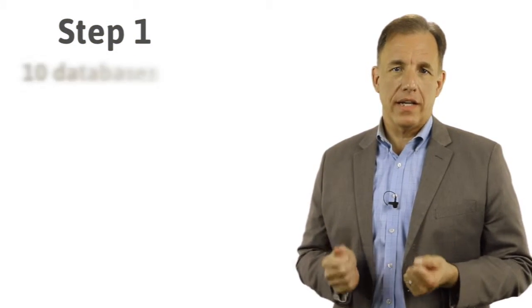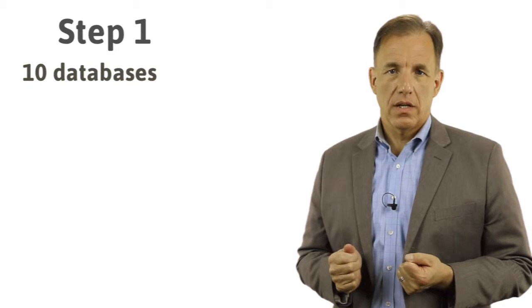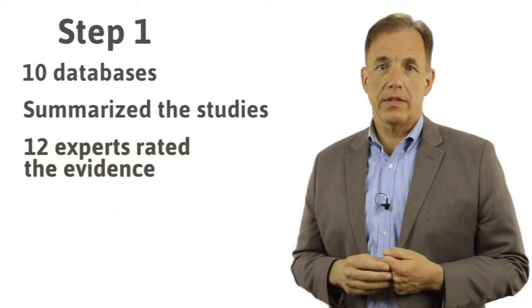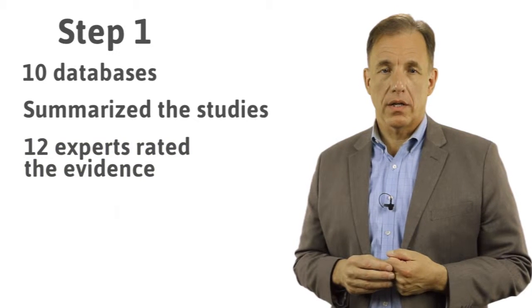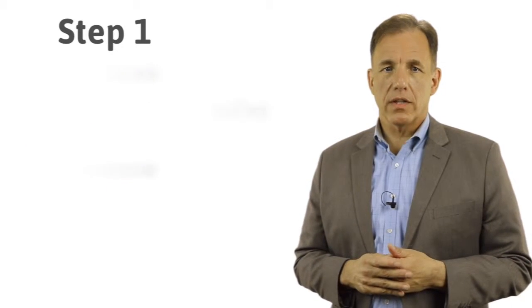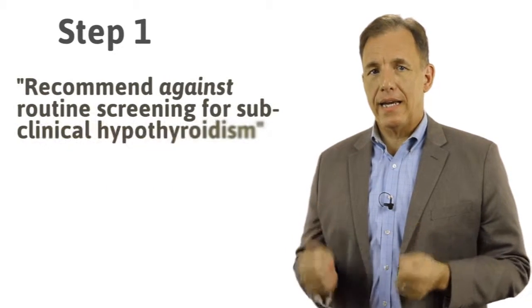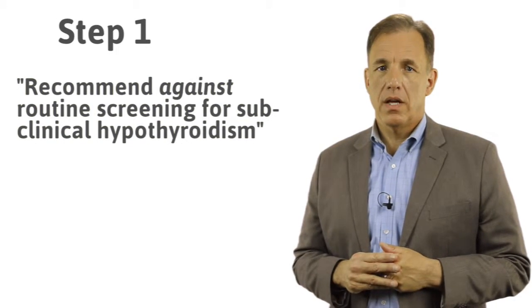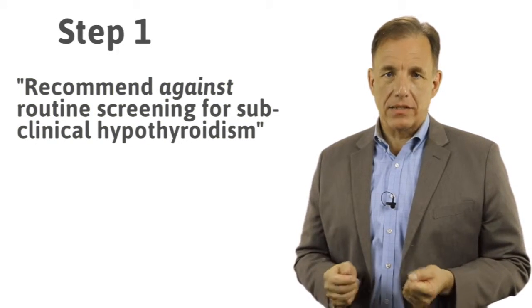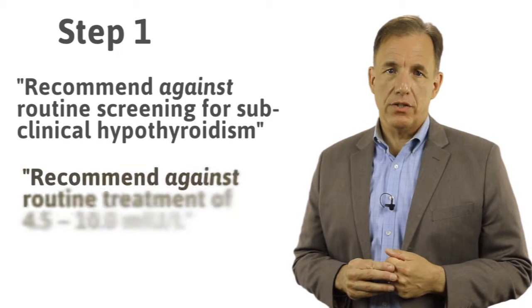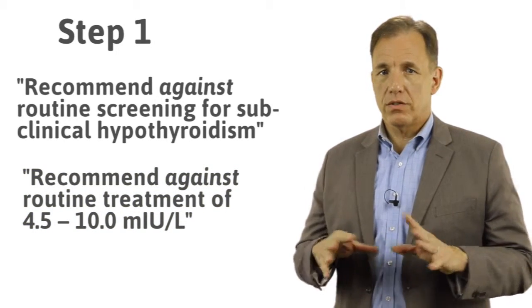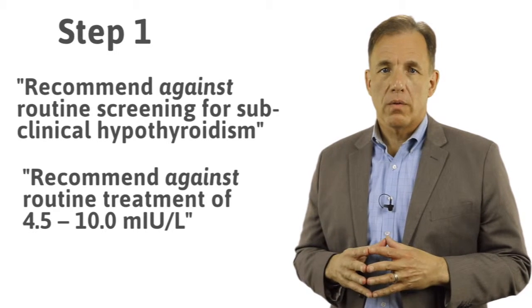This evidence group searched 10 databases, summarized all of the studies, and 12 experts graded the evidence for its quality. Based on their reading of the literature, they recommended against routine screening for subclinical hypothyroidism. They also recommended against the routine treatment of TSH levels within the range of 4.5 to 10, which is the range where we think about subclinical hypothyroidism.